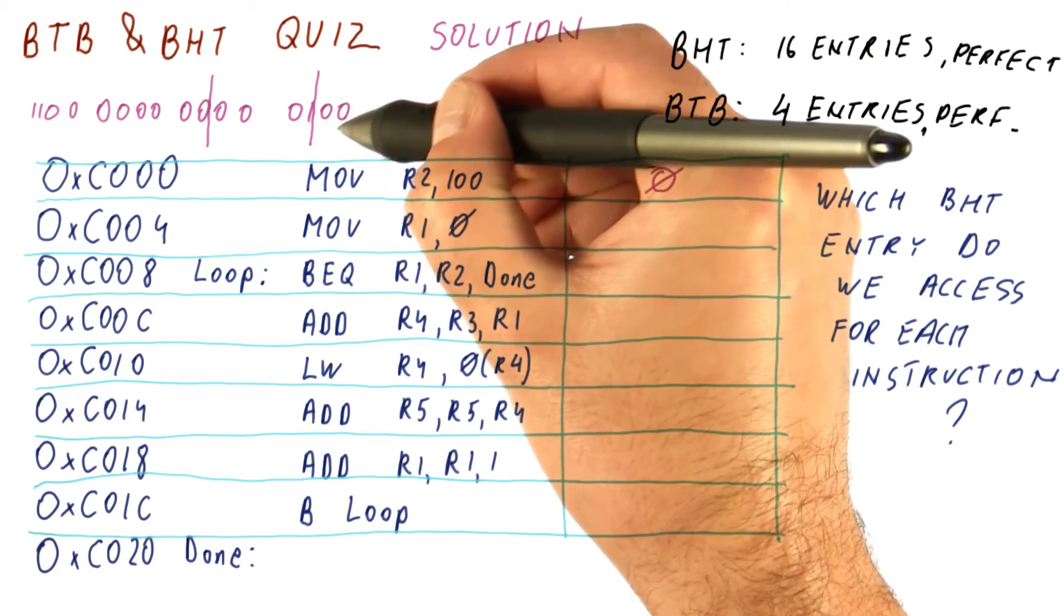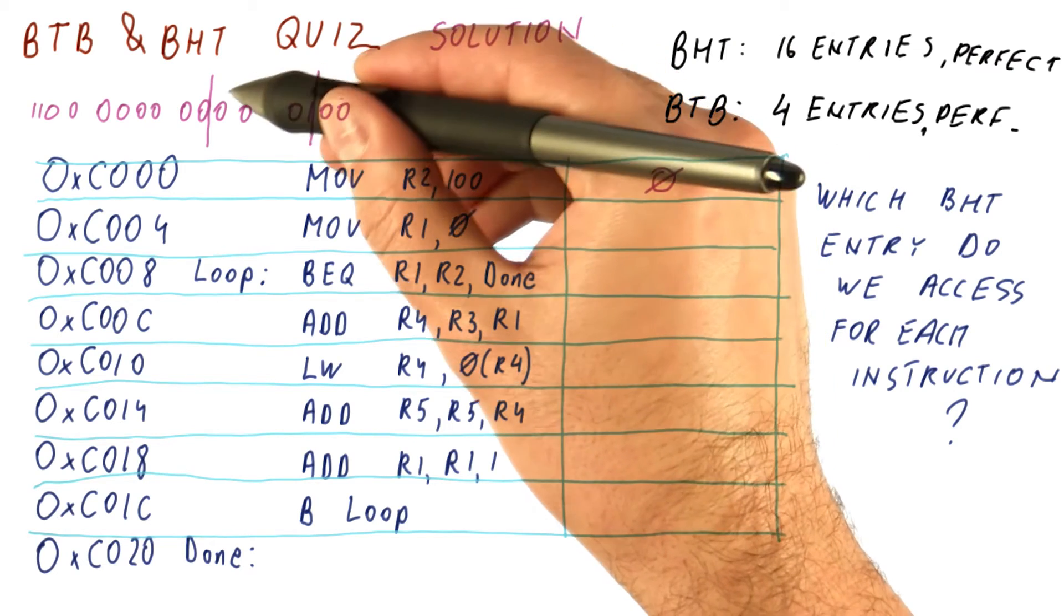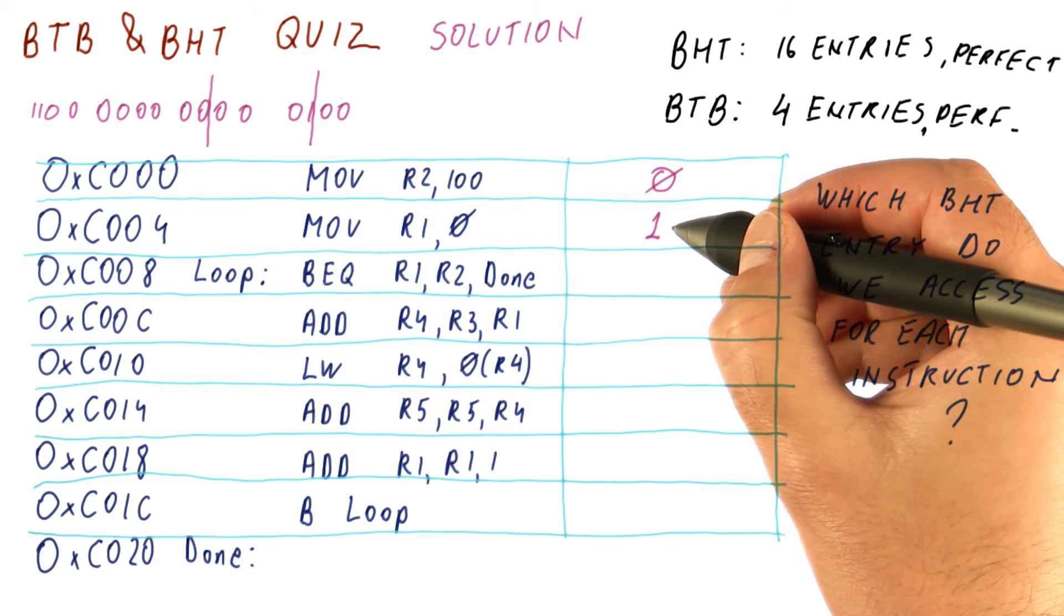Again, we discard these bits because they are never changing among instructions. And this is the number of the BHT entry. So the entry that we access here is one.